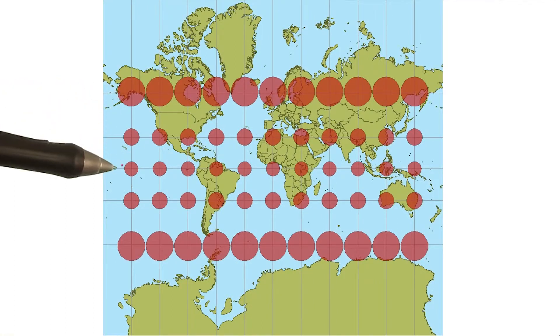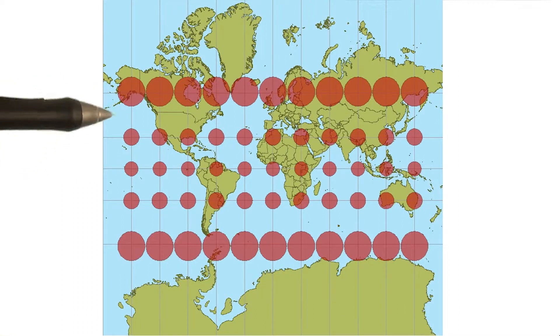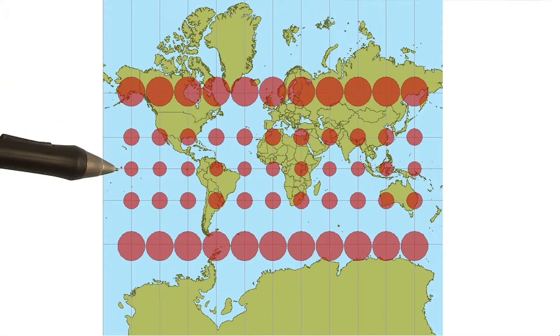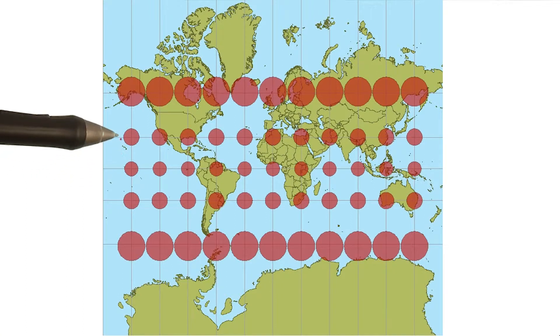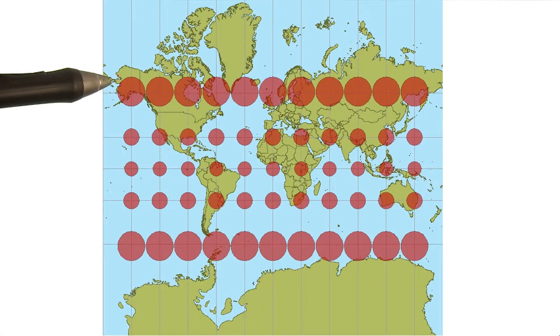So there's not equal distortion going from the equator north, but it does its best as close to the equator as it can to preserve area. And once you get far, far north, the Mercator projection is much more lenient in its distortions.